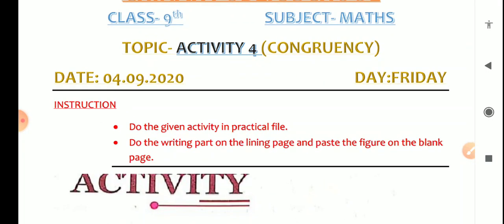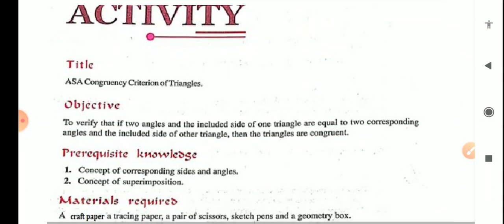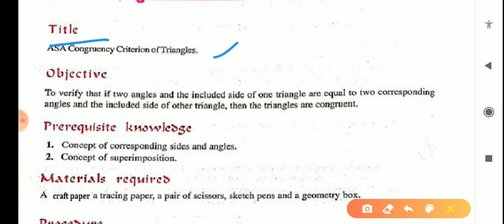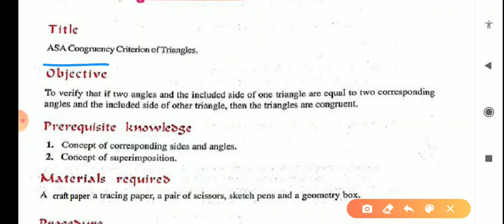First of all, the instructions: do the given activity in the practical file, do the writing part on the lining page, and paste the figure on the blank page. The activity is based on ASA Congruency Criteria of Triangles. You will write the objective: to verify that if two angles and the included side of one triangle are equal to two corresponding angles and the included side of another triangle, then the triangles are congruent.